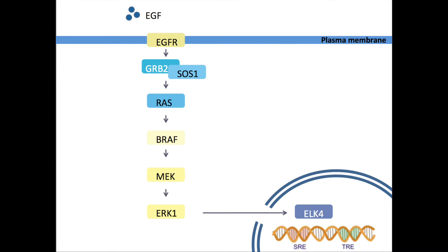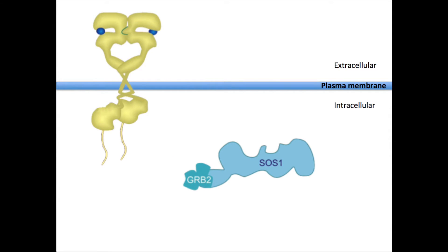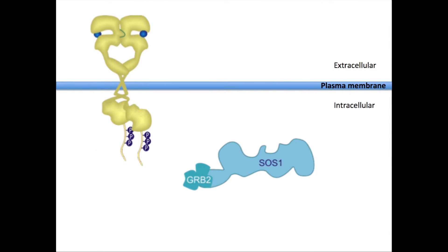First, we will discuss how the pathway functions under normal circumstances. It starts when epidermal growth factor, EGF, binds to its receptor, EGFR, which is a single membrane-spanning receptor with an intrinsic kinase domain. Upon ligand binding, the extracellular part of EGFR forms a dimer, and the intracellular tails phosphorylate each other. This is called transphosphorylation.